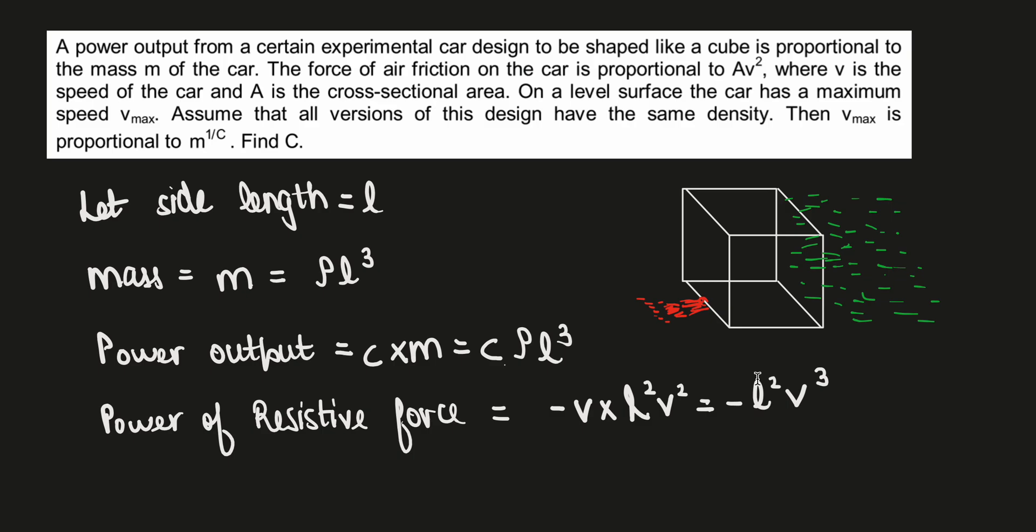Hi, so someone has asked me this question. In this problem, we are given an experimental car design which is shaped like a cube. The mass of the car is m, and the force of air friction is proportional to Av², where A is the cross-sectional area and v is the speed. It's also given in the first line that the power output is proportional to the mass of the car.